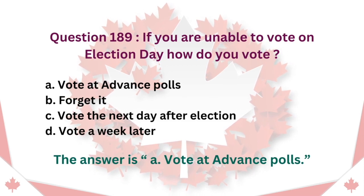Question 189: If you are unable to vote on election day, how do you vote? A. Vote at advance polls. B. Forget it. C. Vote the next day after election. D. Vote a week later. The answer is A. Vote at advance polls.